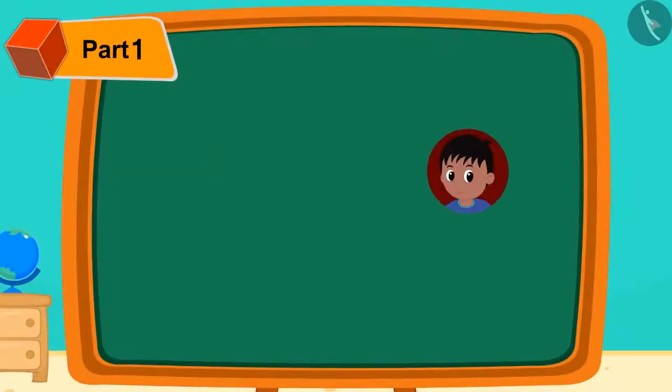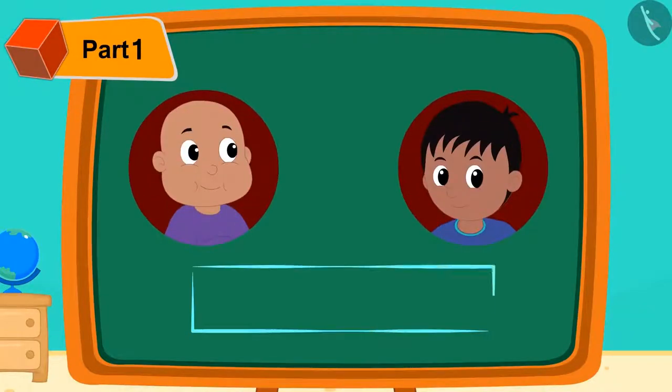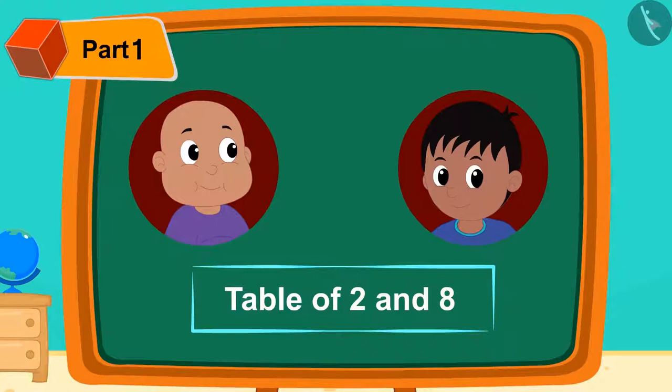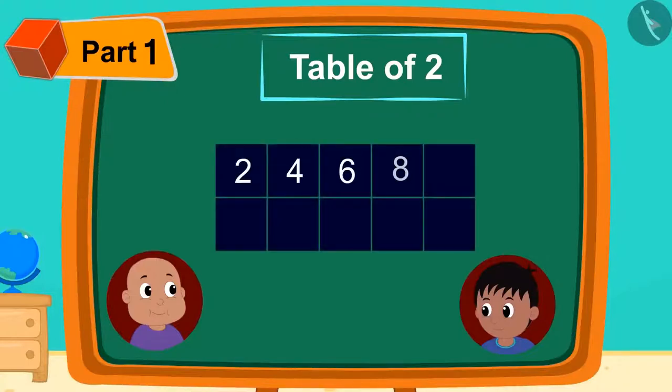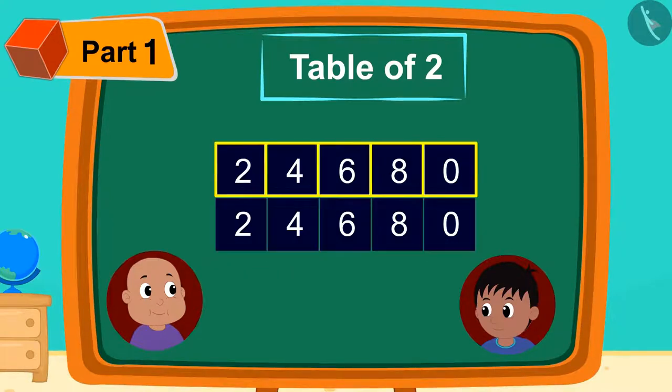First, Raju is teaching Bablu the easy way to memorize the table of 2 and 8. Raju is first referring to 2's table. He wrote these patterns in a table: 2, 4, 6, 8, 0 in 2 lines.